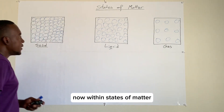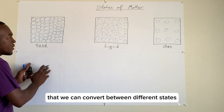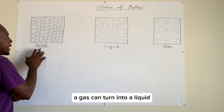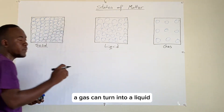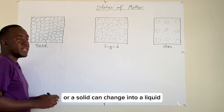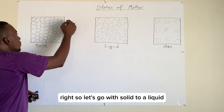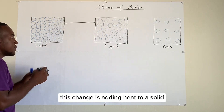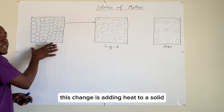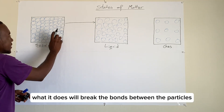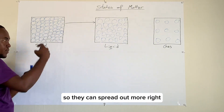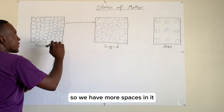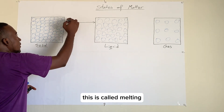Within states of matter, we should know that we can convert between different states. So under specific conditions, a gas can turn into a liquid or a solid can change into a liquid. Let's go with solid to a liquid. Adding heat to a solid breaks the bonds between the particles so they can spread out more, creating more space. This process is called melting.